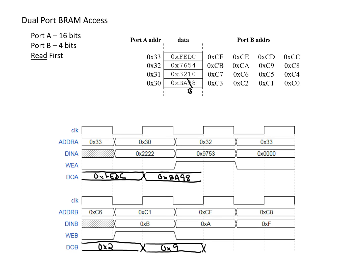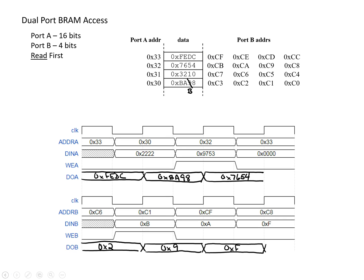Moving on to the next address: for port A we have address 32, so we read out the current contents, which is 0x7654. For port B we're looking at address CF, which has the value of 0xF. Now taking care of the write: port A is writing to address 32, so the value in 32 takes on its new value of 0x9753.